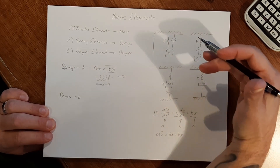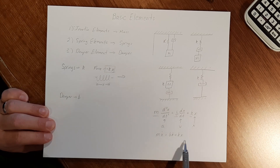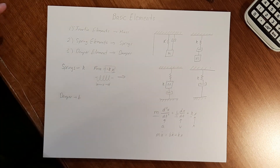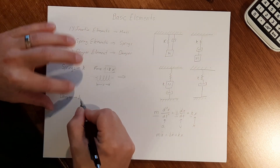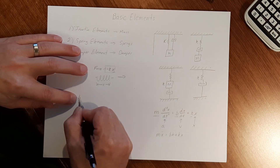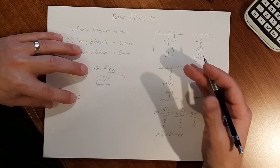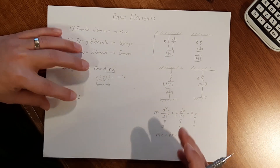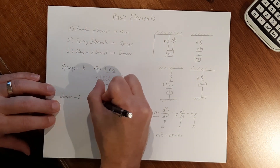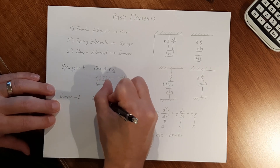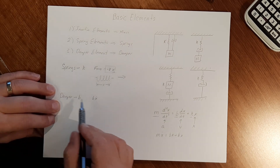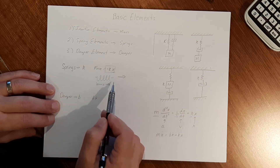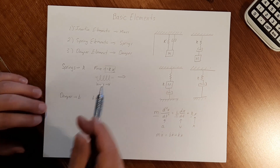Once we start writing more and more of these mathematical models for different systems, you're going to be utilizing a lot of this. What does a dampener do? It slows things down — it absorbs energy. So as we increase the constant B, we're going to be applying more dampening to the system. We can see that we're affecting velocity, slowing it down by dampening it. The BẊ term represents velocity, because the dampener is directly related to how it affects velocity. And going back to springs, the distance X — how much it stretches — is directly related to its force.